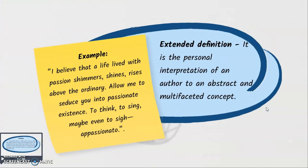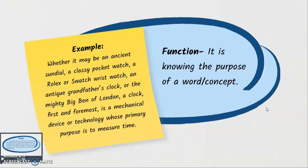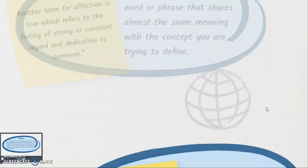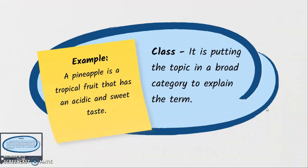The next technique is extended definition — it is the personal interpretation of an author to an abstract and multifaceted concept. It goes beyond denotation and connotation, drawing upon the author's own perspective of the world. Another technique is function — it is knowing the purpose of a word or concept. When we say synonyms, it is a single word or phrase that shares almost the same meaning with the concept you are trying to define. When we say class, it is putting the topic in a broad category to explain the term.